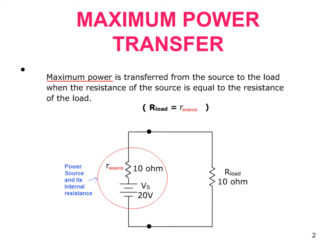The fundamental concept: the maximum power is transferred from the source to the load when the resistance of the source is equal to the resistance of the load. For example, a battery with an internal resistance of 10 ohms connected to a load of 10 ohms — since R_load equals R_source, maximum power transfer takes place.